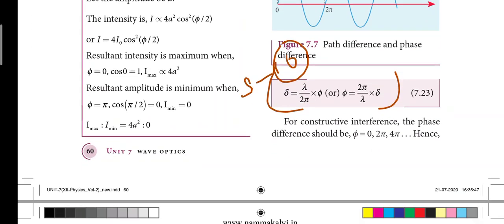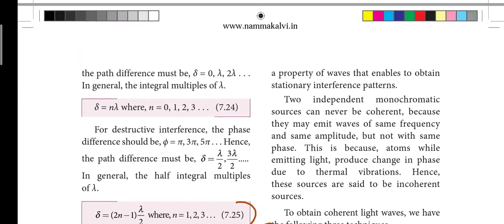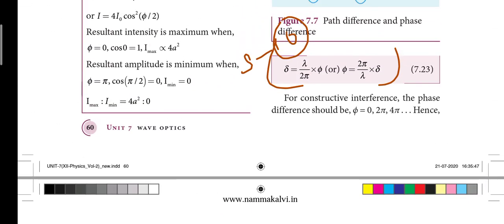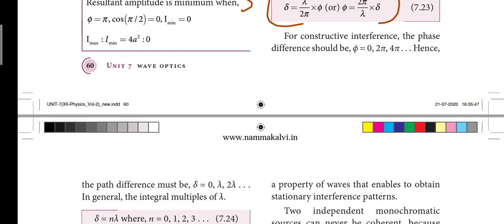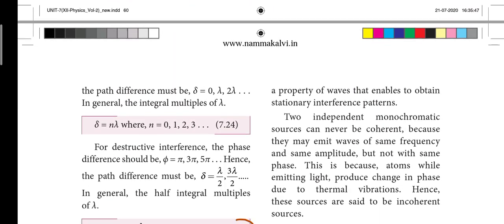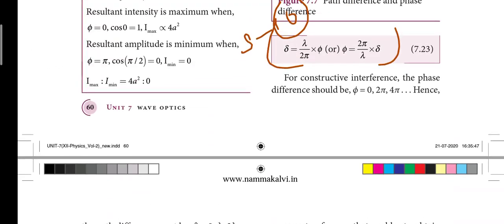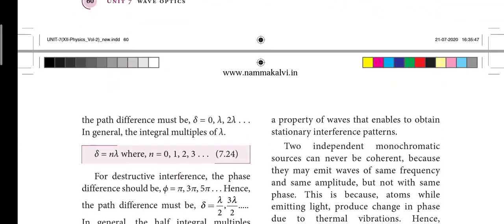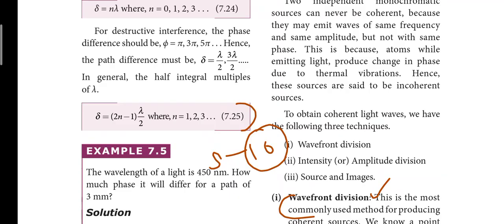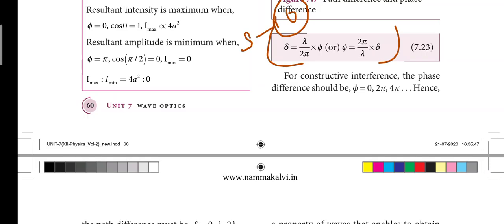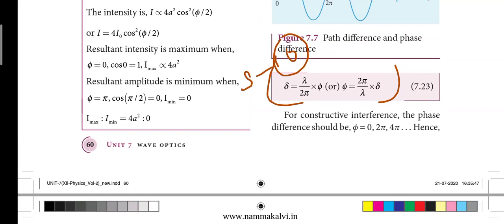Tenth short answer. Delta is equal to lambda by 2 pi into phi, or phi is equal to — so on the fourth one, we have to write the equation. For constructive interference phase, delta is equal to 2n minus 1 into lambda by 2 — we have to write the equation. So that is S10, the tenth short answer.